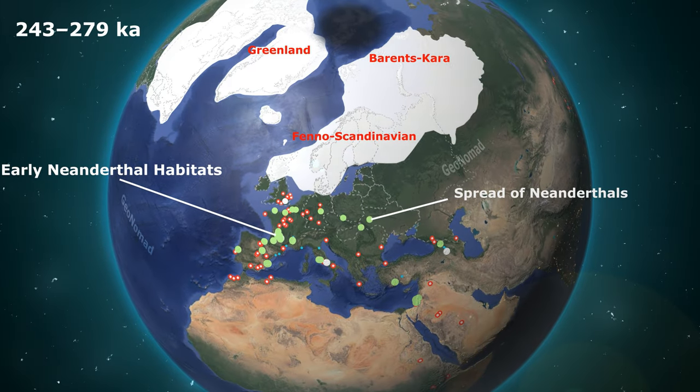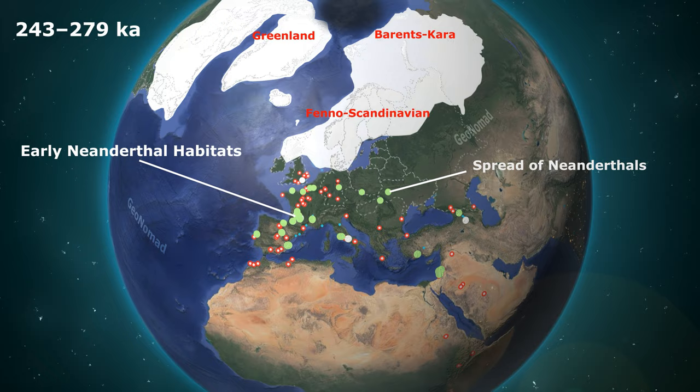In this video, the ice sheet change process in the Northern Hemisphere during the Ice Age and the relationship with hominin habitats at each period are displayed on a map and introduced.